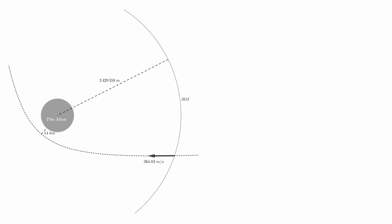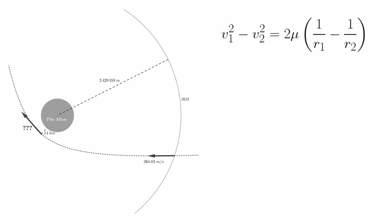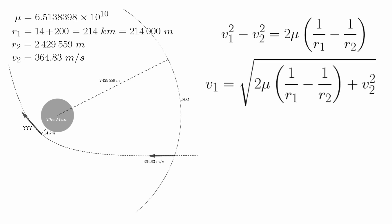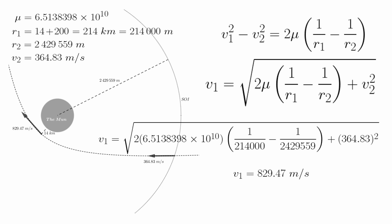It's time to switch our point of reference to the moon. We now know the speed at which we are entering the moon's SOI. Next, we need the speed we would be traveling when we are at our closest approach of 14 kilometers above the moon's surface. For that, we need this formula. The R's are distances from the moon's center, and since we are in the moon's SOI, the gravitational parameter Mu needs to change to that for the moon. I'm going to make R1 the lower altitude of 214,000 meters and R2 the higher altitude, which is just the sphere of influence of the moon, 2,429,559 meters. V2 is our encounter speed of 364.83 meters per second, and substituting in the numbers we get 829.47 meters per second for our velocity at closest approach.